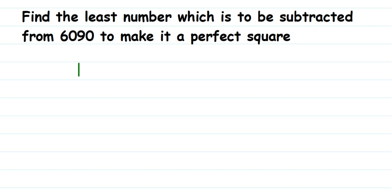So let's begin. We're going to use the division method, which is different from normal division. We have 6090. Since this number is not a perfect square, you're going to get a remainder. The first step is to start pairing up the digits from the right side. So 90 will become one pair and 60 will become one pair. If a single digit is left, that's okay — you can still proceed.